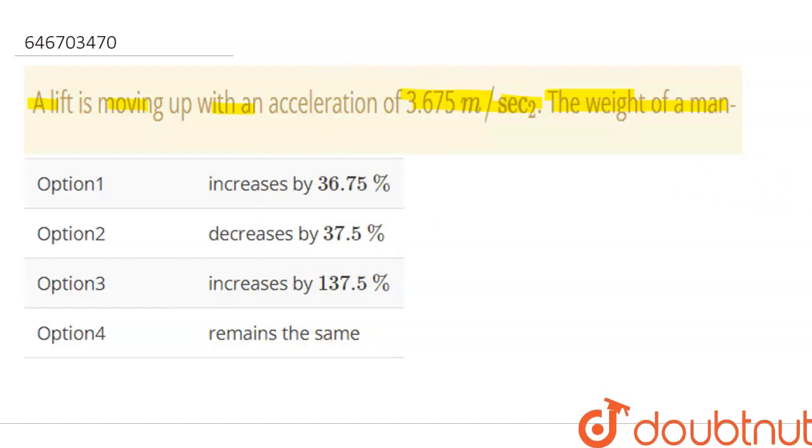So, first of all, let's visualize this situation. This is that elevator inside which there is this person. This elevator is moving up with acceleration 3.675 meters per second square. Now, let's draw the free body diagram.